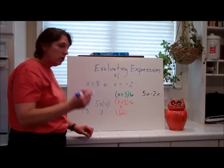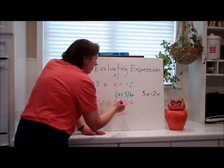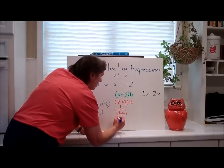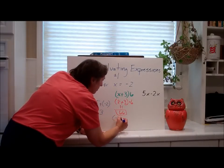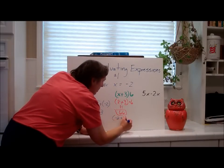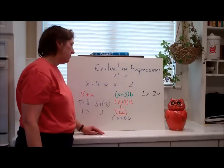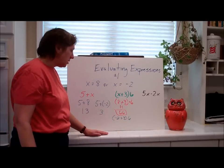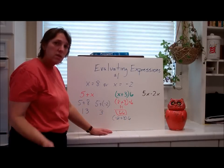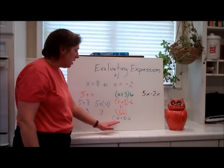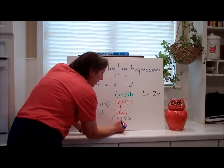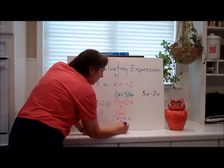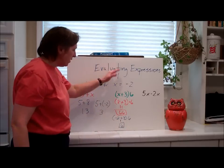I'm going to change the color. Now I have to put negative 2 plus 3, times 6 — the quantity of negative 2 plus 3 times 6. Order of operations: go inside the parentheses. Negative 2 plus 3 is 1. And 1 times 6 is 6. I'm going to box my answers so it's very clear.